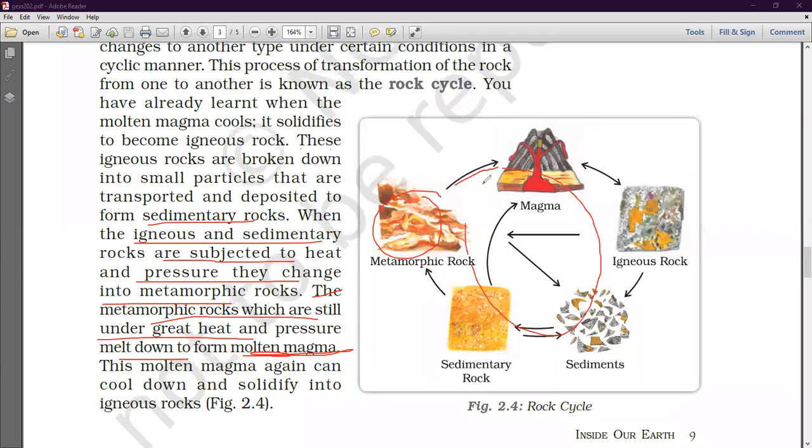Where it starts, it will end. If magma is making all the things, so it can be made in the last one. Then, this magma again cool down and solidify into igneous rock. Then, this magma cool down and what happens in the igneous rock? So, this is a whole cycle, a whole process. Starting and ending result, we can see the same.